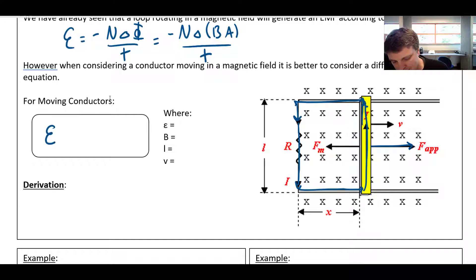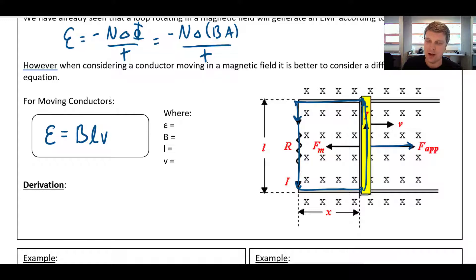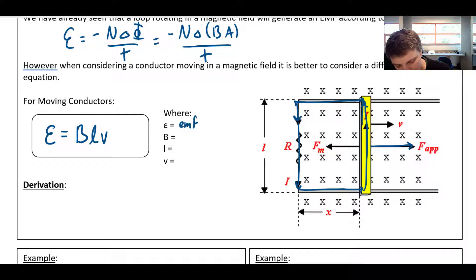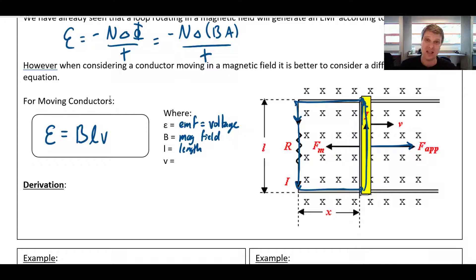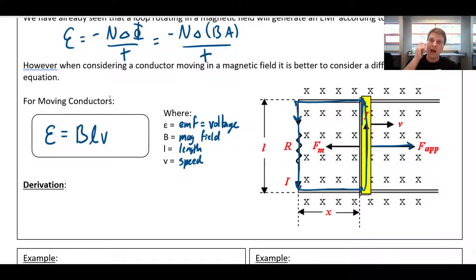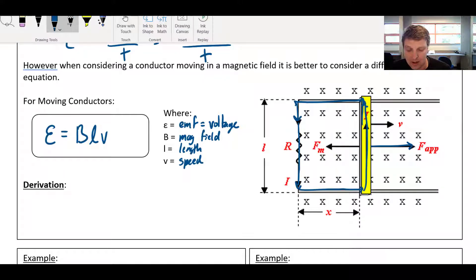To calculate the amount of EMF, we say EMF equals B times L times V — using a fancy L so it's not confused with a one. E is our EMF, which is our voltage; B is our magnetic field strength; L is the length of the bar that is in the field; and V is the speed of the bar.